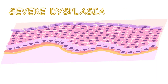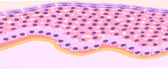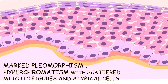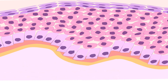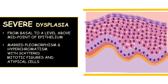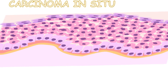In severe dysplasia, the epithelium is altered from the basal cell layer to a point above the midpoint of the epithelium. You'll observe marked pleomorphism, hyperchromatism, with a few scattered mitotic figures and atypical cells.